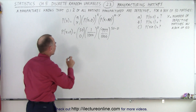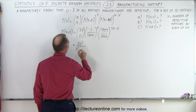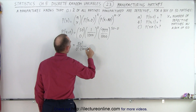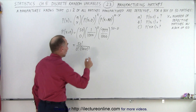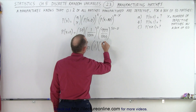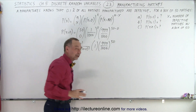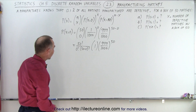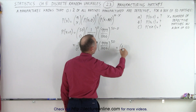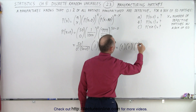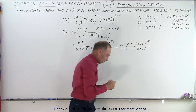That is equal to 50 factorial divided by zero factorial times 50 factorial, times one over a thousand to the zero power. Anything to the zero power equals one, so that term equals one. We have 999 over a thousand raised to the 50th power. Since 50 factorial over 50 factorial equals one, we get one times one times 999 over 1000 raised to the 50th power.